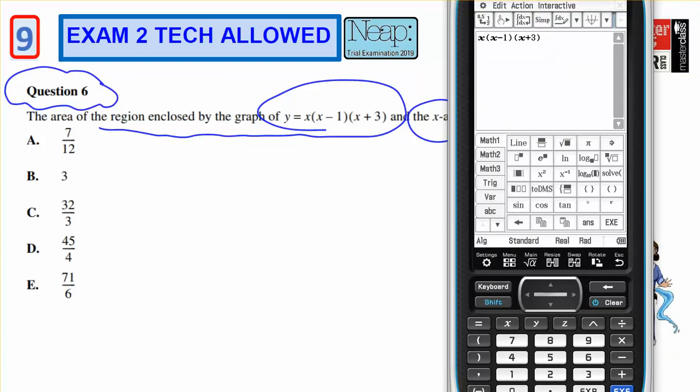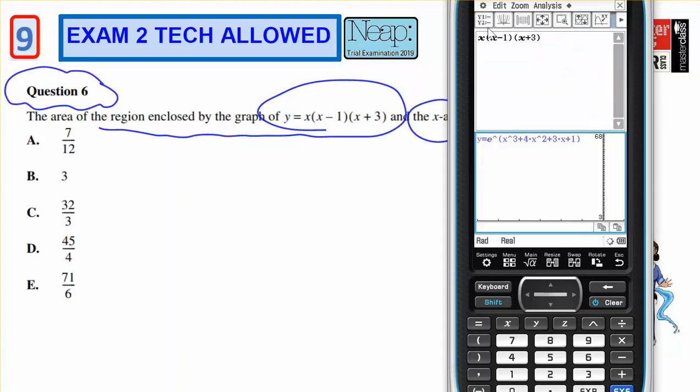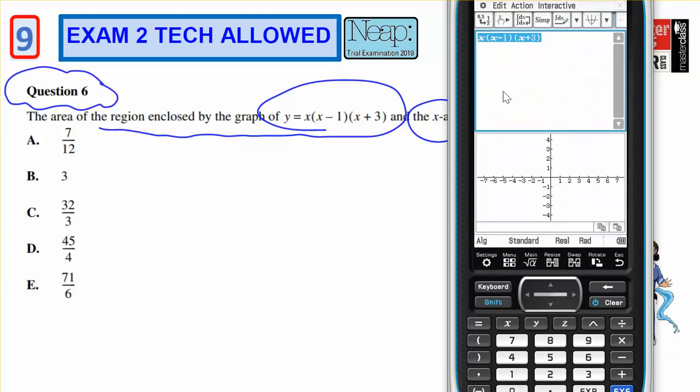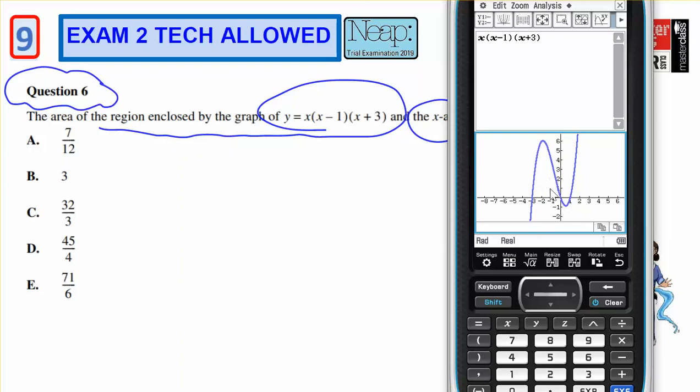Okay, so I might like to have a look at it. So open access, edit, clear all, grab this, drag and drop. I can see that I want those areas enclosed, so it's these two areas. So I might do that all on calculator.